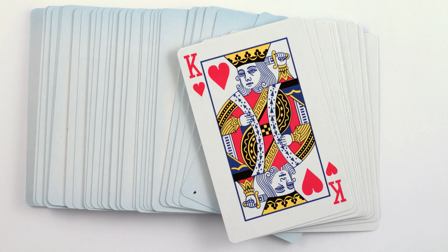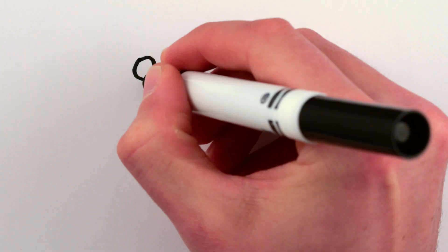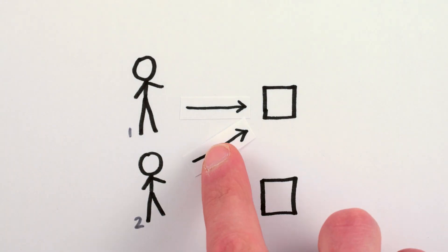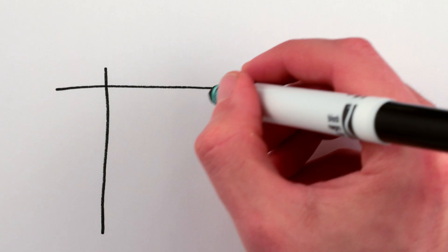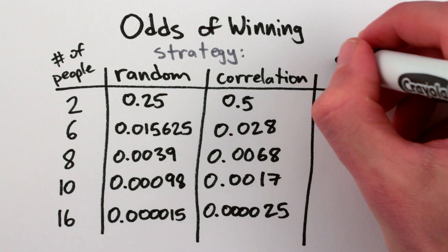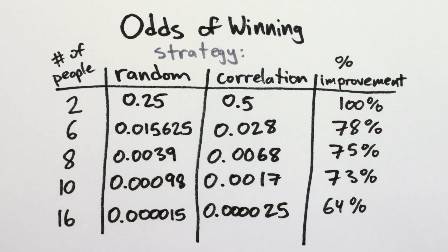You could do a little better by trying to correlate which boxes you pick. Like, if there were only two people and two boxes, they should each pick different boxes because if they pick the same box, only one of them can possibly find their own bill and they'll automatically lose. But this kind of correlation strategy only improves your odds a tiny little bit and has less and less benefit the more people there are. This is not looking good for the gamblers.